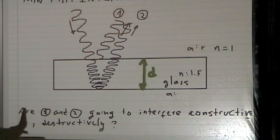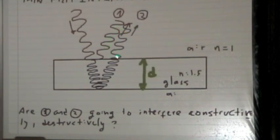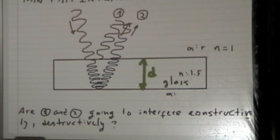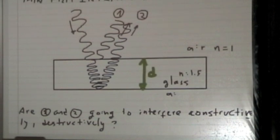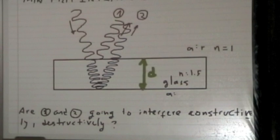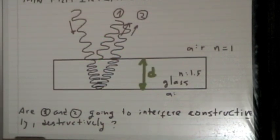Just like the case of two speakers we discussed — if there's any difference in phase, the sound could be completely canceled. Here, if the amplitudes are the same, a difference in phase of pi between wave one and wave two will result in no reflection from this piece of glass. That's exactly what anti-reflection coatings on glasses do: a coating of specific thickness makes the two waves interfere destructively.